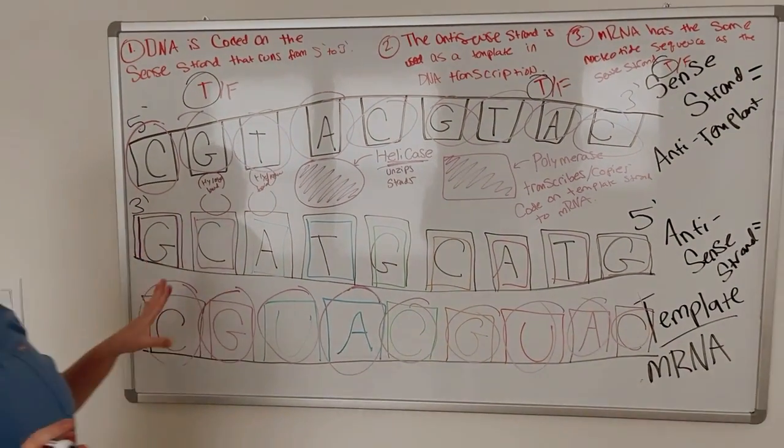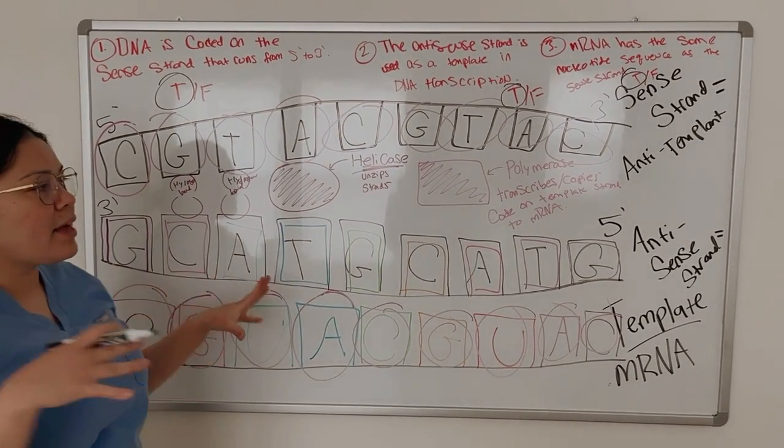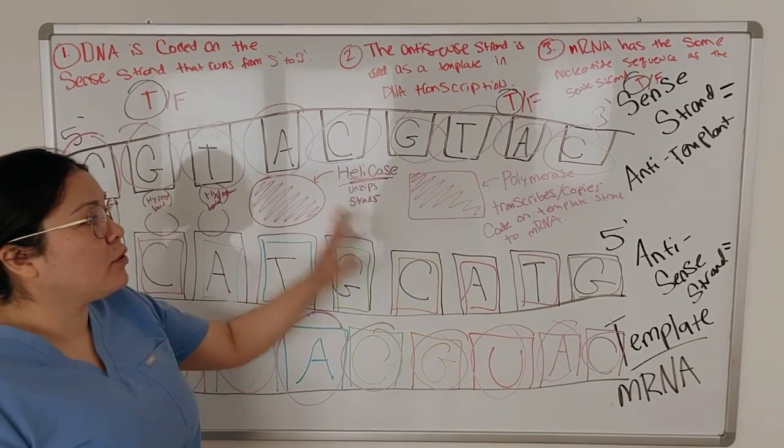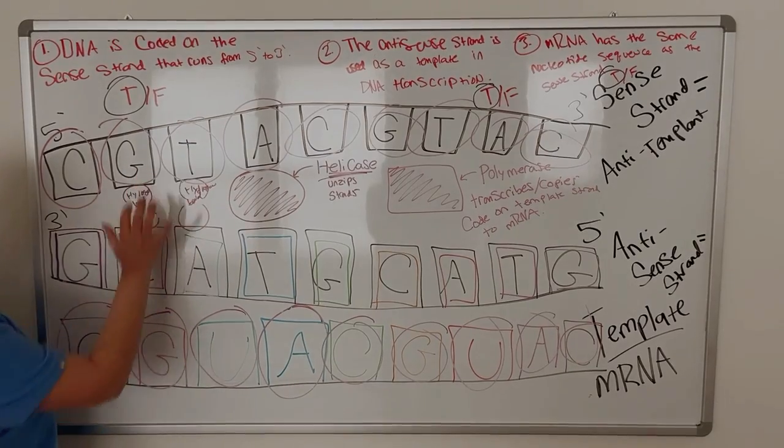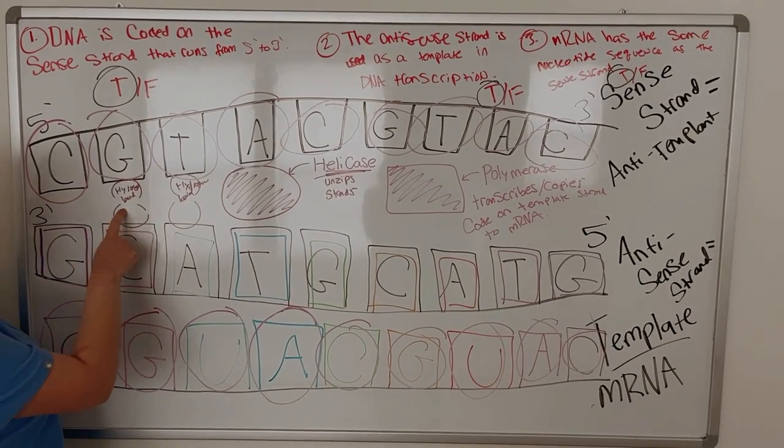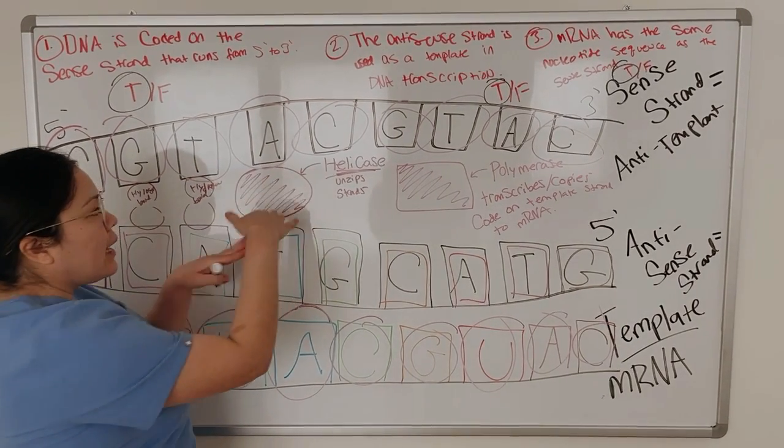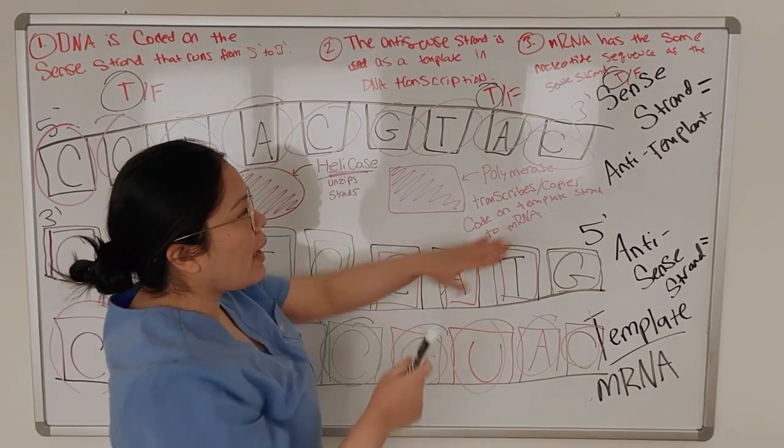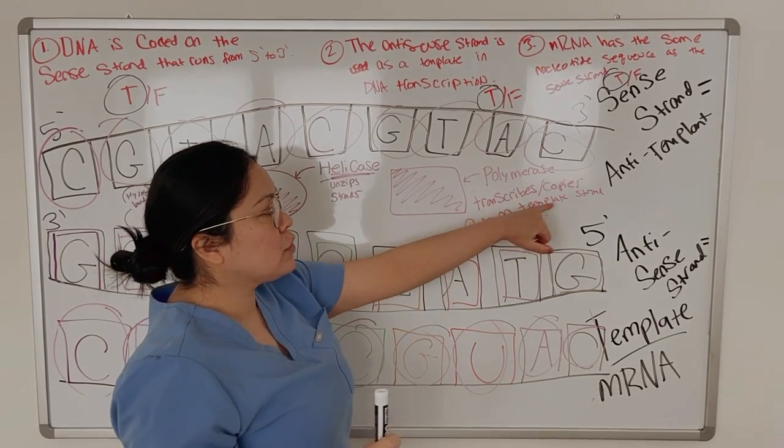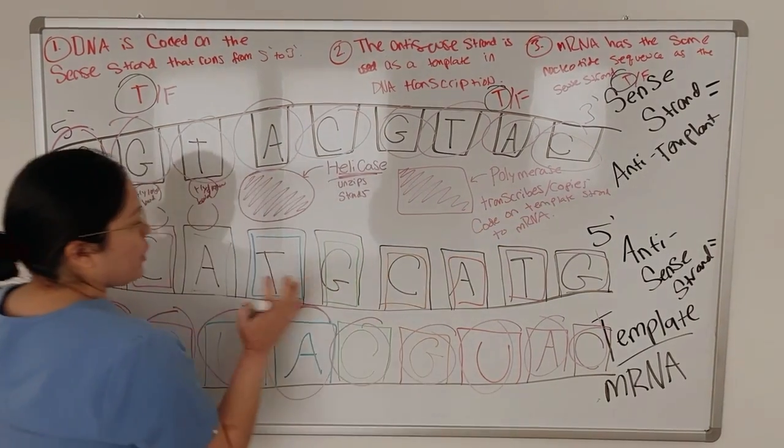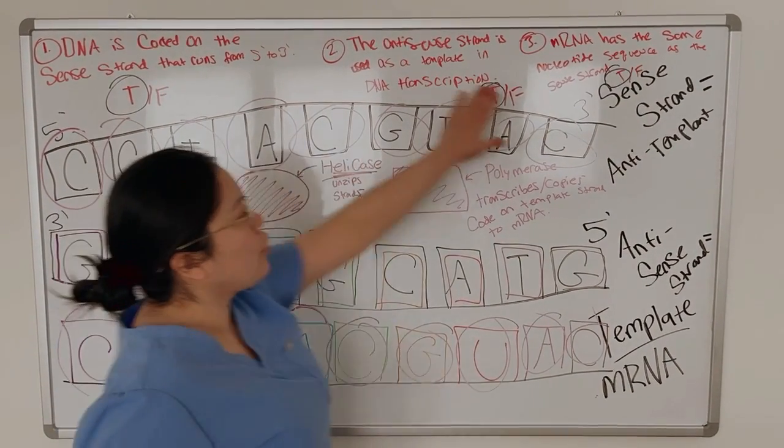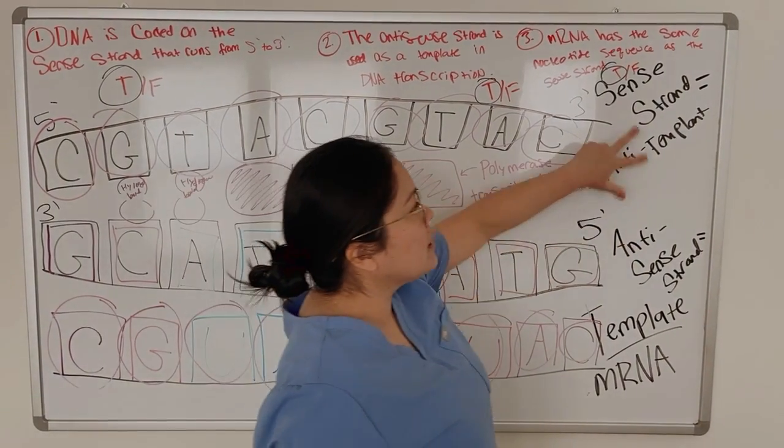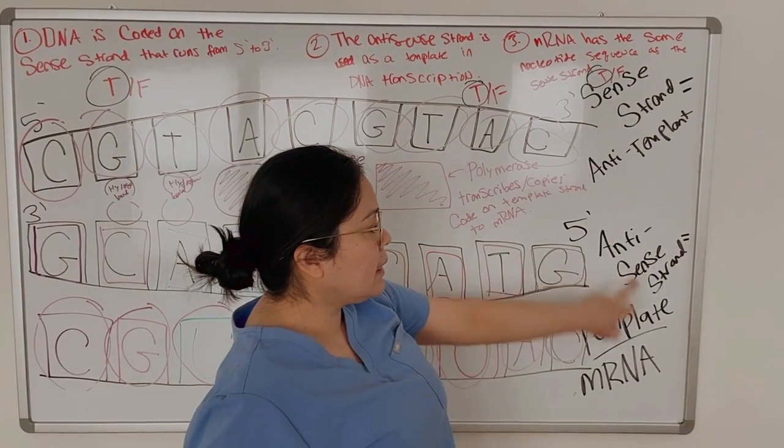That pretty much wraps it up. I just want to point out a couple little things that you absolutely must know as far as transcription for your test exam. Know that your nucleotide bases are held together by hydrogen bonds. You have to know that. Know that the double strand is unzipped and they will use that word unzipped by helicase. And then know that polymerase enzyme is the one that transcribes or copies the template strand to the mRNA. Know that the sense strand runs from five prime to three prime. The anti-sense runs in opposite direction. So three to five. Also know that these two are the same things. Sense and anti-template, anti-sense and template.